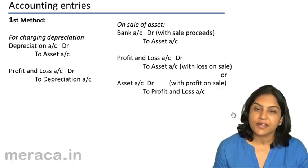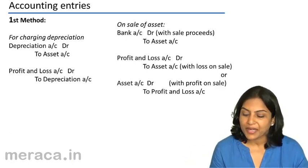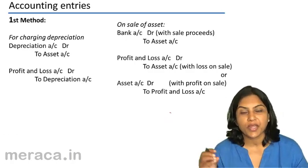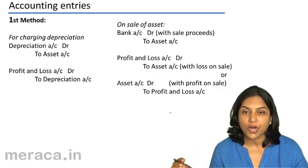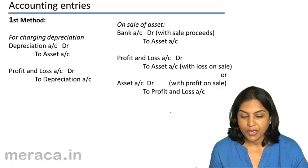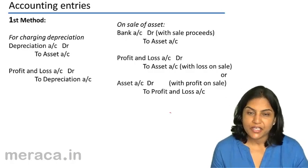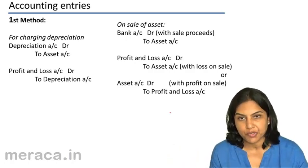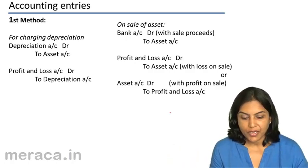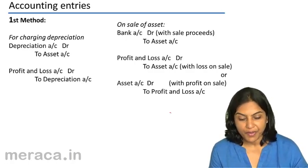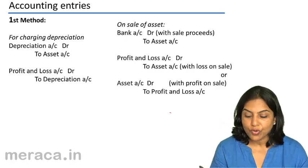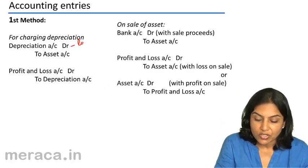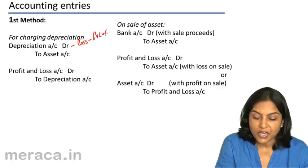Before discussing other methods, let us quickly understand the accounting entries when we record depreciation. The first method is without a provision for depreciation account or an accumulated depreciation account. For charging depreciation, the entry will be depreciation account debit to asset account. Depreciation account is debited because it is a loss and is therefore charged to the profit and loss account.